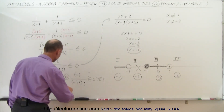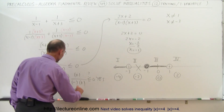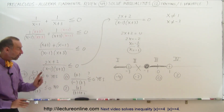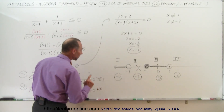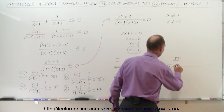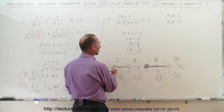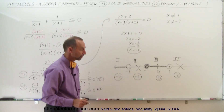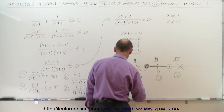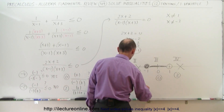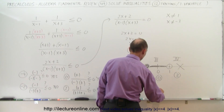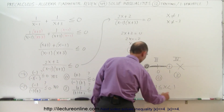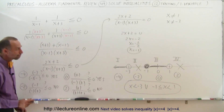Finally, for region 4, we pick the number 2. Plugging it in gives a positive numerator. 2 minus 1 is positive, and 2 plus 3 is positive — everything is positive, and that cannot be less than or equal to 0. The answer is no. So the solution is the region less than negative 3, and the region between negative 1 and 1, including negative 1 but not including 1. We can write this as: x less than negative 3, or negative 1 less than or equal to x less than 1.